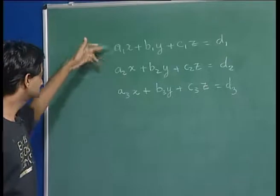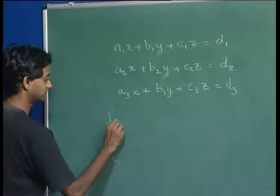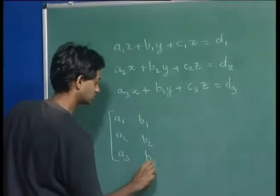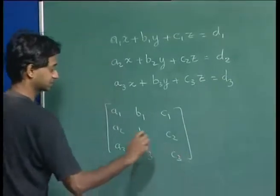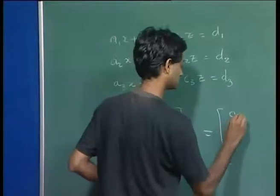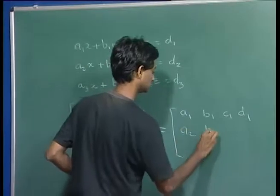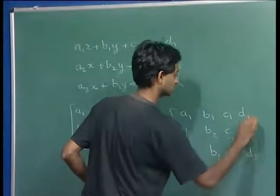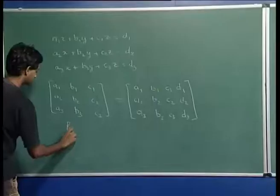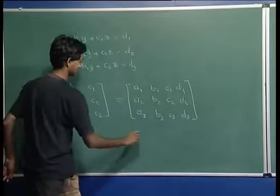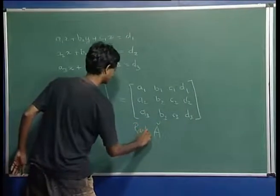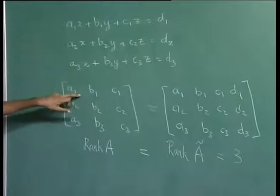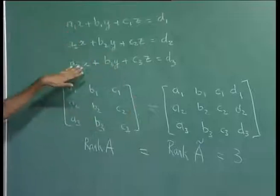We already saw that the condition for these equations to have a unique solution is that the rank of the matrix formed by A1, A2, A3, B1, B2, B3, C1, C2, C3 has to be equal to the rank of the augmented matrix A-tilde. So rank of A has to equal rank of A-tilde and this has to equal the number of independent variables, which is 3.